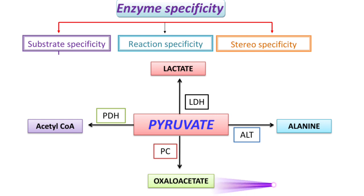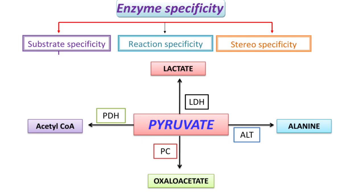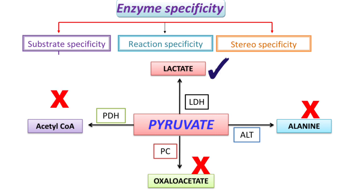And if alanine transaminase acts on pyruvate, it forms alanine. So the same substrate is converted into different products because of different enzymes. That means if you add alanine transaminase to pyruvate, it forms only alanine — no other product. If ALT is replaced by LDH, then pyruvate forms only lactate. Based on the enzyme added to the substrate, that particular product will be formed.